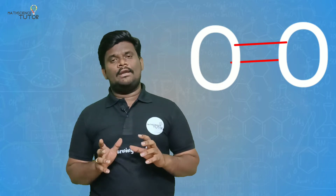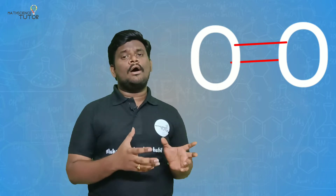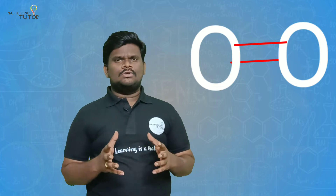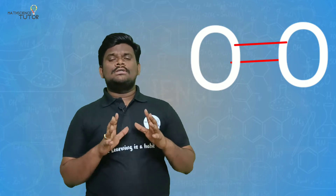Usually in ionic bonds, a metal and a non-metal are formed. In the case of a covalent bond, it is formed between one non-metal and one metalloid, or between two non-metals.